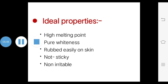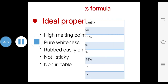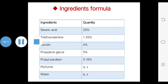Here I discuss the ideal properties of vanishing cream. Vanishing cream has a high melting point, pure whiteness, is easily rubbed on the skin, and is non-sticky as well as non-irritating. These are some ideal properties of vanishing cream.